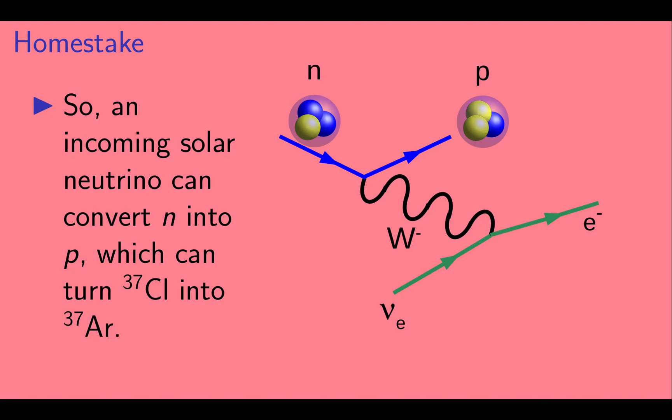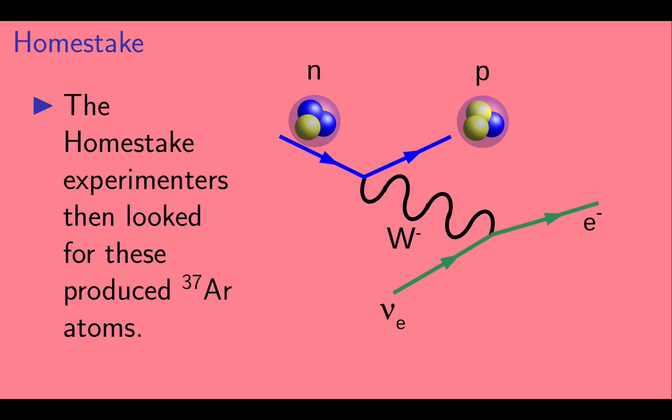So, an incoming solar neutrino can convert a neutron into a proton, which can turn chlorine-37 into argon-37. The Homestake experimenters then looked for these produced argon-37 atoms.